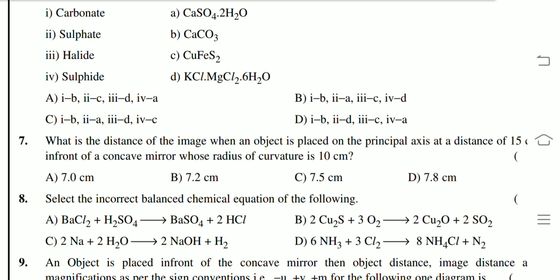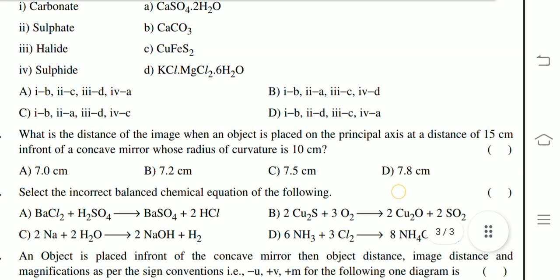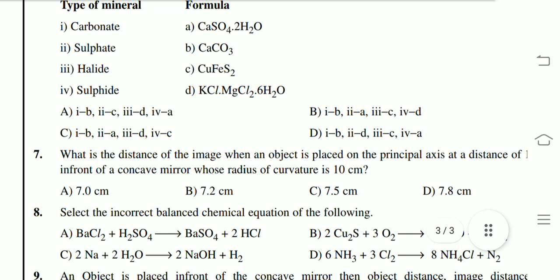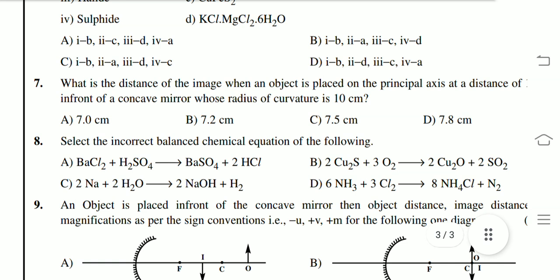Seventh: what is the distance of image when an object is placed on the principal axis at a distance of 15 cm in front of a concave mirror whose radius of curvature is 10 cm? Select the incorrect balanced chemical equation of the following.